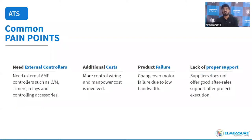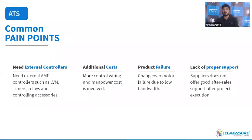Most sites see repeated ATS failure due to voltage fluctuation. We design our ATS controller to withstand from 140V AC up to 300V AC, and the motor bandwidth is designed for 140V AC to a maximum of 285V AC. Lack of proper after-sales support is also a key pain point.